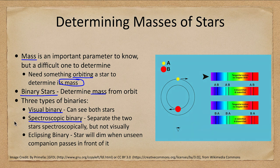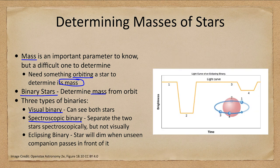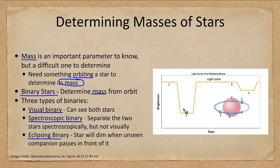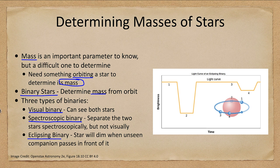We also have eclipsing binary stars such as shown here. In this case a star will dim when an unseen companion passes in front of it and we can see that in the light curve. And we can use those properties to help us determine the mass of a star.